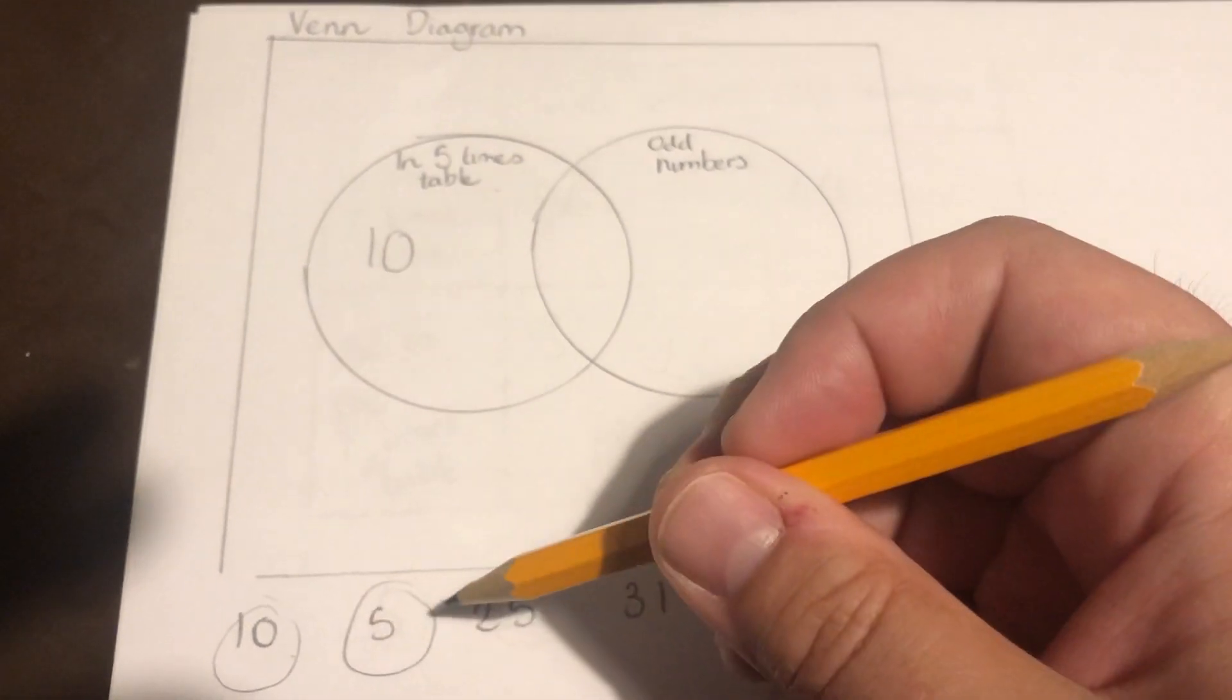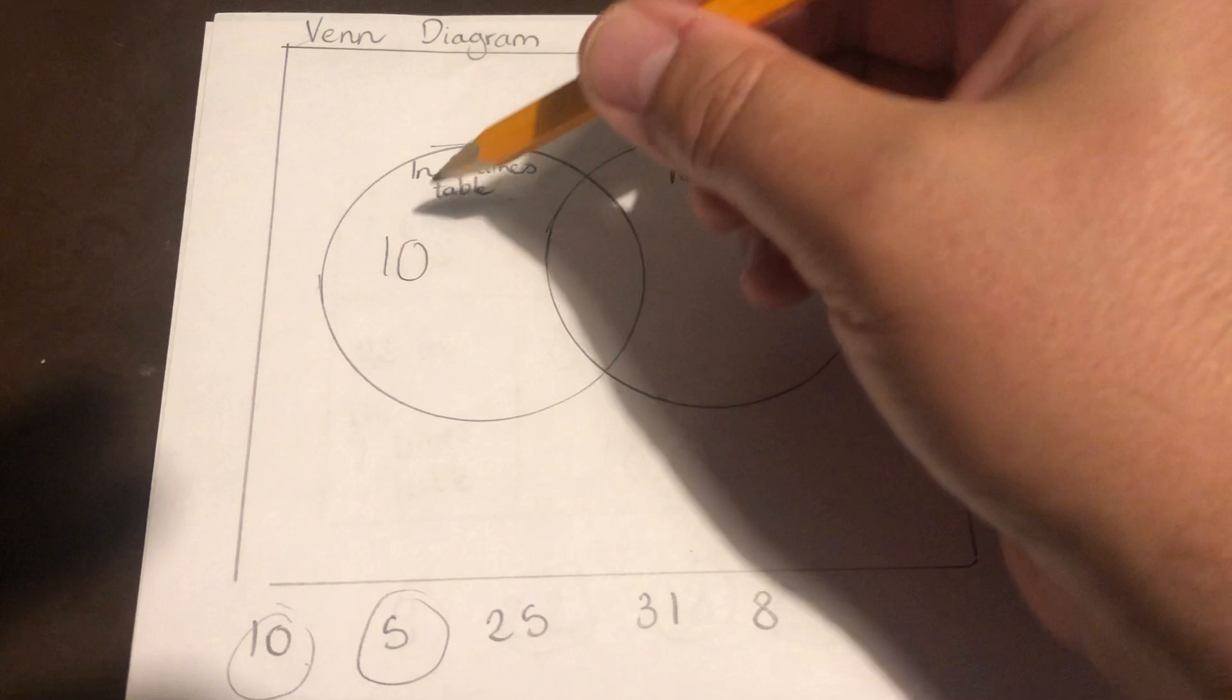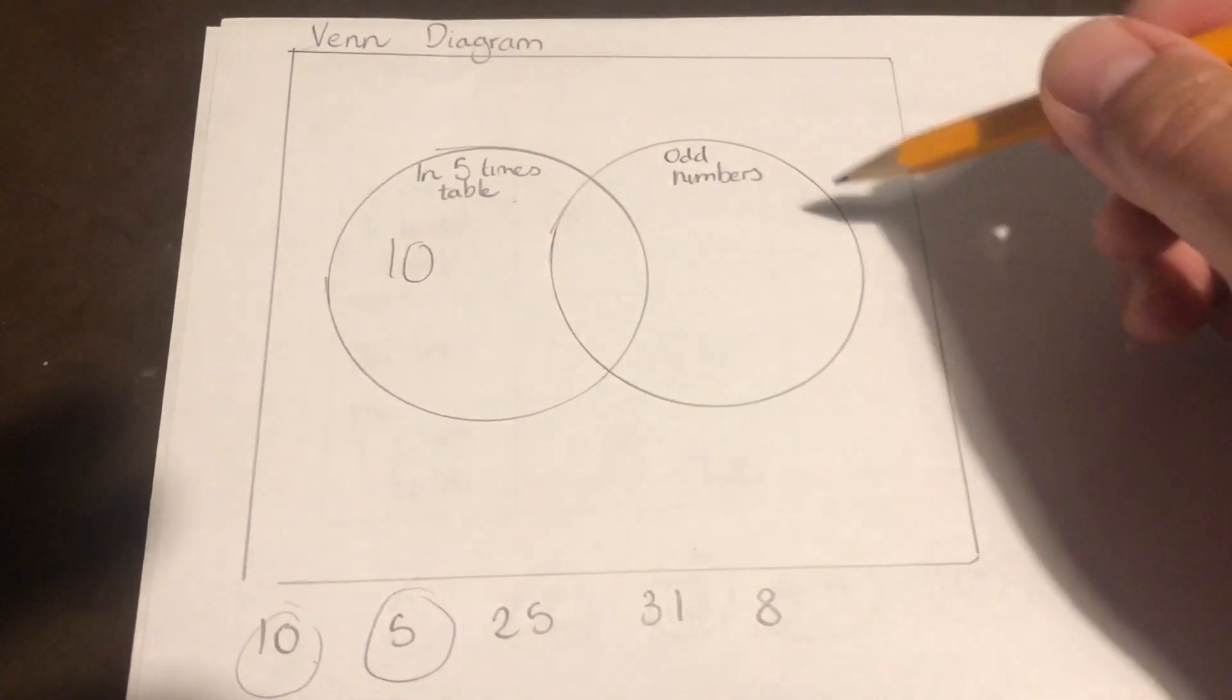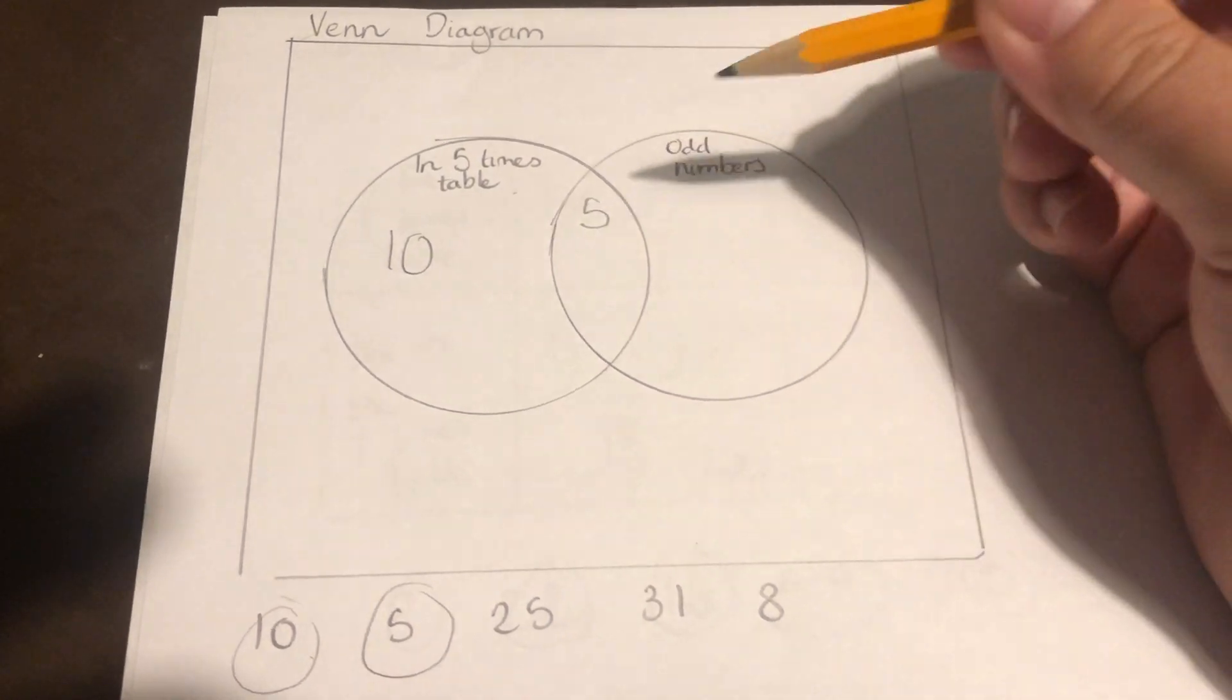Number 5, that again is in the five times table. It's got to go in this circle, but it's also an odd number. So it's got to go inside both circles, which puts it right in the center here.